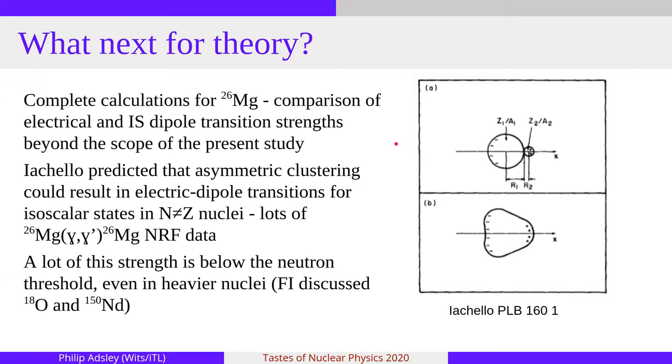So these would be unusual dipole transitions between isoscalar states with quite strong B(E1)s. And a lot of this strength that's predicted is below the neutron threshold, even in some of the heavier nuclei. But certainly in the cases that we're looking at, the neutron threshold in magnesium-24 is at about 16 MeV. And as you can see from our spectra, there's a large amount of dipole strength below the neutron threshold and how this relates to say the dipole polarizability, whether it should be included or not is I think something which isn't quite clear to me. But if other people want to chip in, then that would be appreciated.